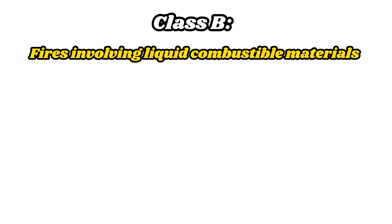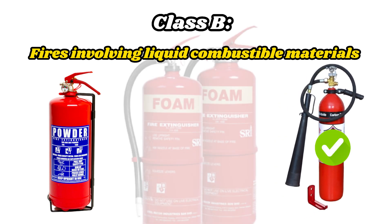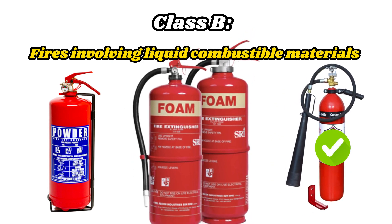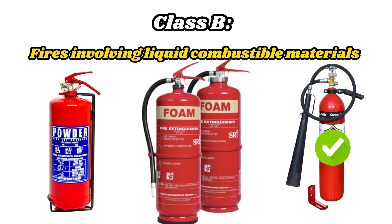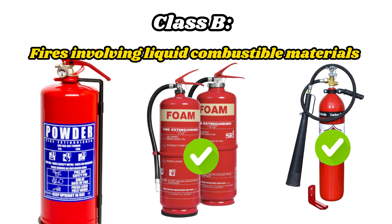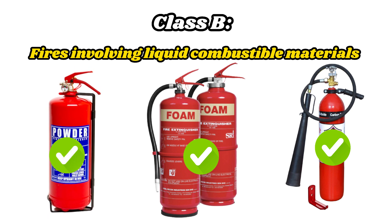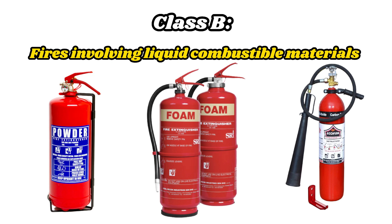Class B fires can be extinguished with powder and foam fire extinguishers. A foam fire extinguisher forms a layer of foam on the surface of the liquid, suppressing the supply of oxygen necessary for combustion. A powder fire extinguisher disrupts the chemical reaction occurring in the flame, leading to the cessation of the fire. Using other types, such as water, can cause the flammable liquid to spray and the fire to spread quickly.